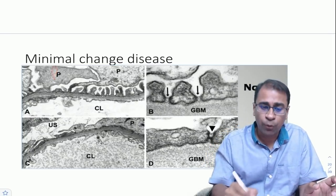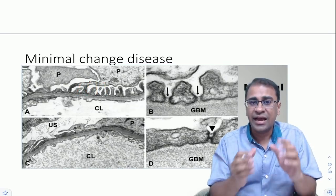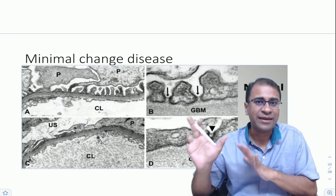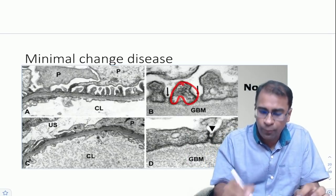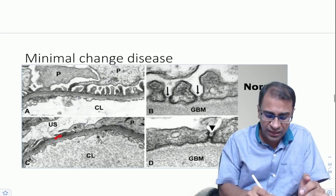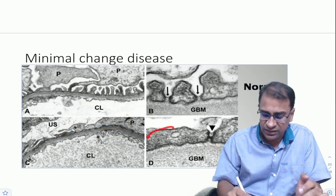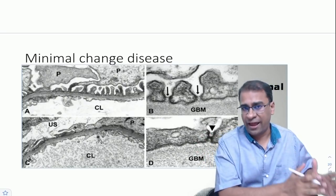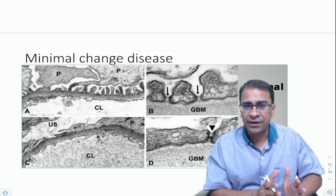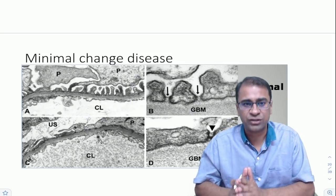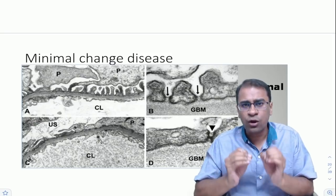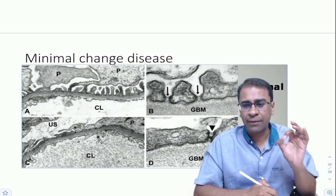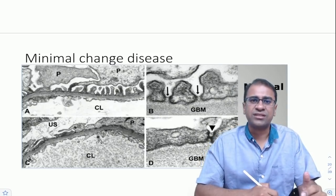This is minimal change disease. On light microscopy you get no change — the only finding is on electron microscopy. Normal podocytes show foot processes, while in minimal change disease you see effaced podocytes without foot processes — this is called podocytopathy, also seen in FSGS, diabetes, and MGN. Remember: no prior history, massive proteinuria, and an excellent prognosis of 90% of cases recovering within six weeks.